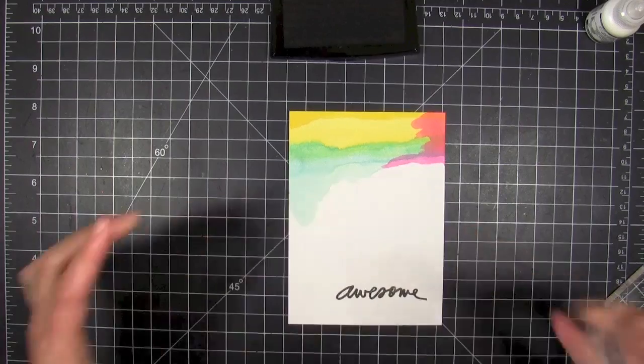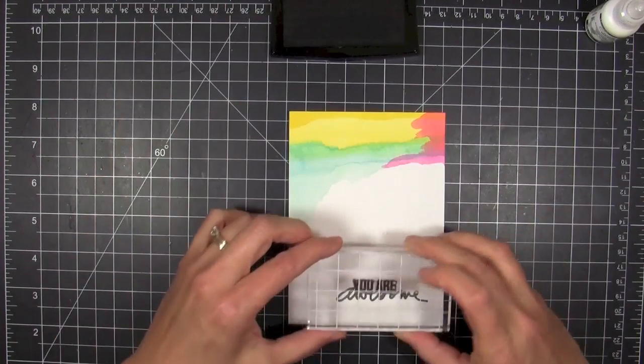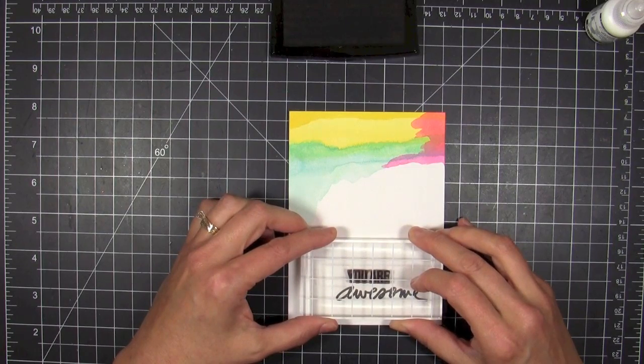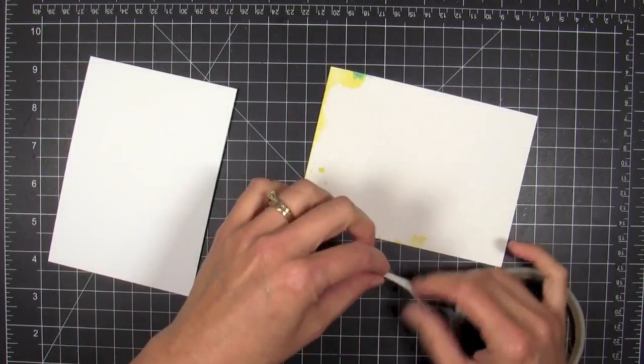I'm using Versafine ink. In hindsight I wish I'd used Archival or Memento, you'll see why when I get towards the end of the card. I'm using Versafine because it's a nice rich black ink and a faster drying pigment ink.